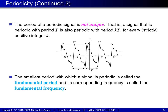A few more comments about periodic functions and sequences: if a function or sequence is periodic, the period is never uniquely determined. That is, if it's periodic with period T, it's also periodic with period KT for any arbitrary strictly positive integer K. For example, a function periodic with period T is also periodic with period 2T, 3T, 4T, and so on. Often we're interested in the smallest period, which is referred to as the fundamental period, and the corresponding frequency is referred to as the fundamental frequency.